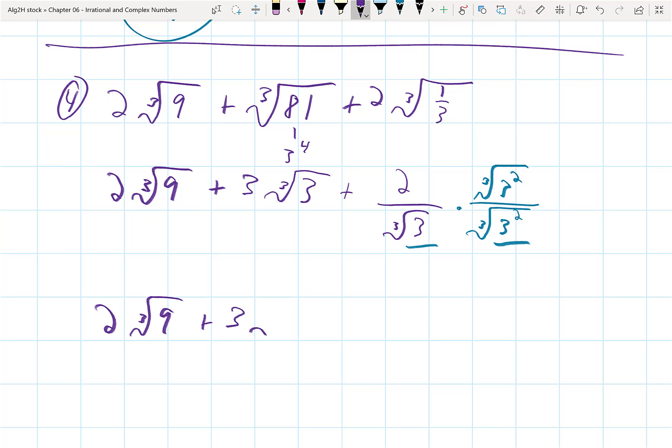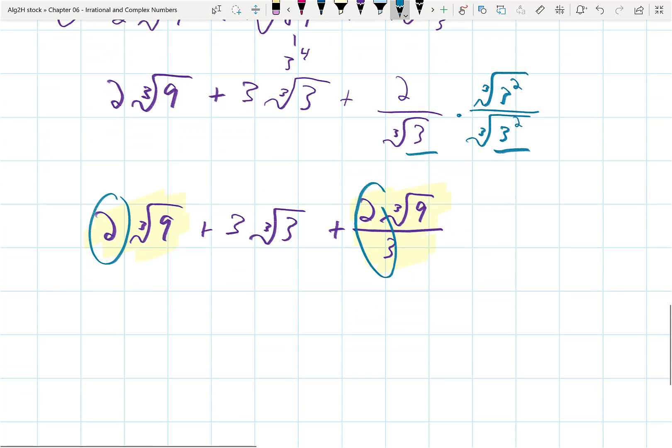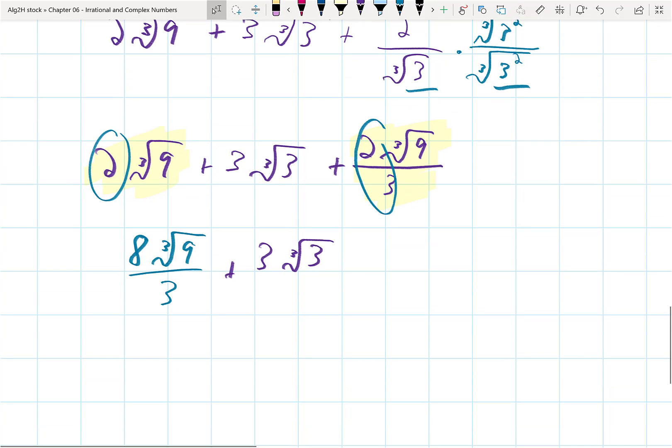So, if I bring this together and keep going, I get 2 cubed root of 9 plus 3 cubed root of 3 plus 2 cubed root of 9 divided by 3. And my like terms in this situation are this term and this term. They both have a cubed root of 9. If I treat it as 2 and 2 thirds, 2 plus 2 thirds is 8 thirds, so this would be 8 cubed root of 9 over 3 plus that remaining 3 cubed root of 3. And if I want to finalize this by adding these all with an LCD of 3, I'd get 8 cubed root of 9 plus 9 cubed root of 3 all over 3.